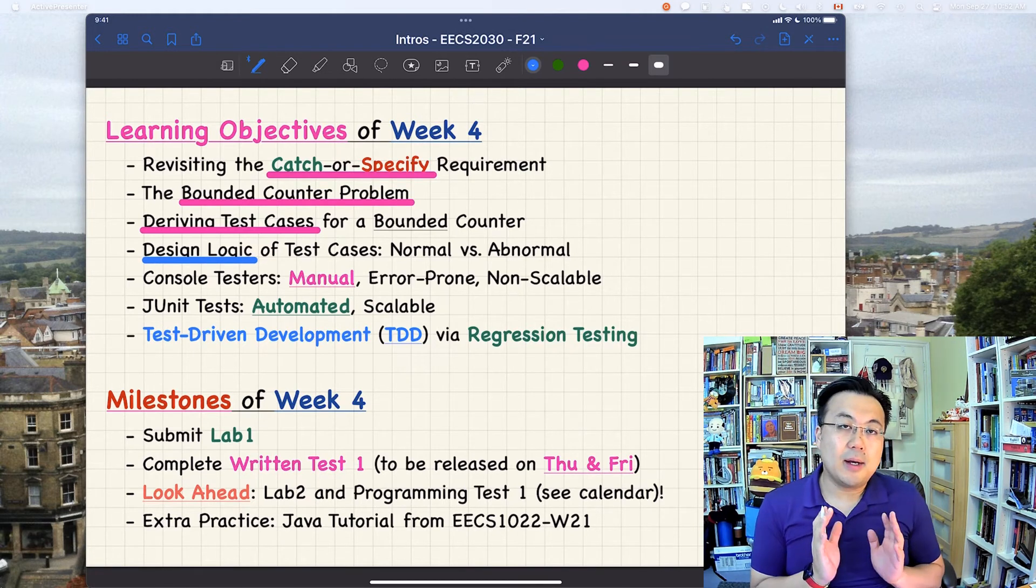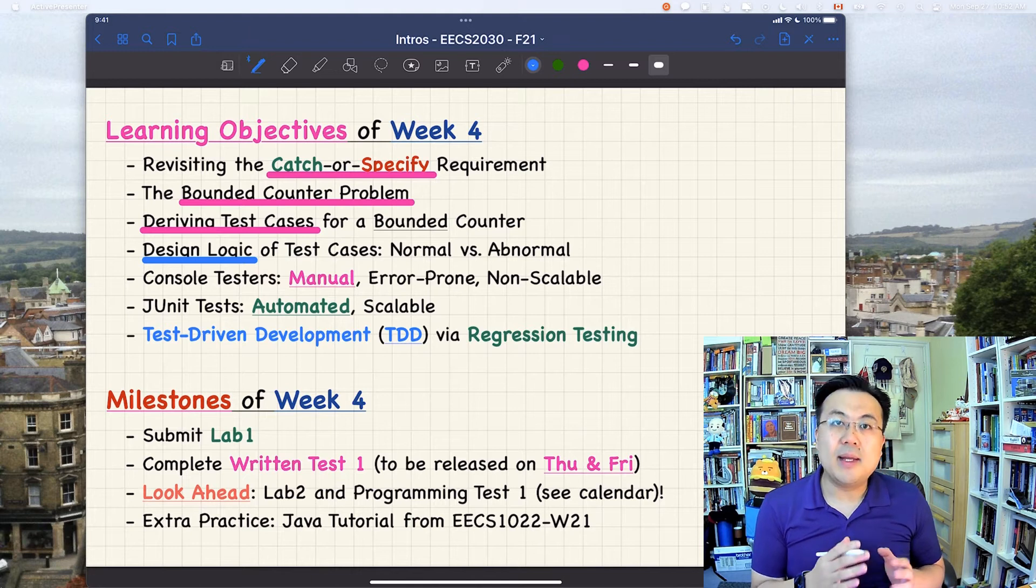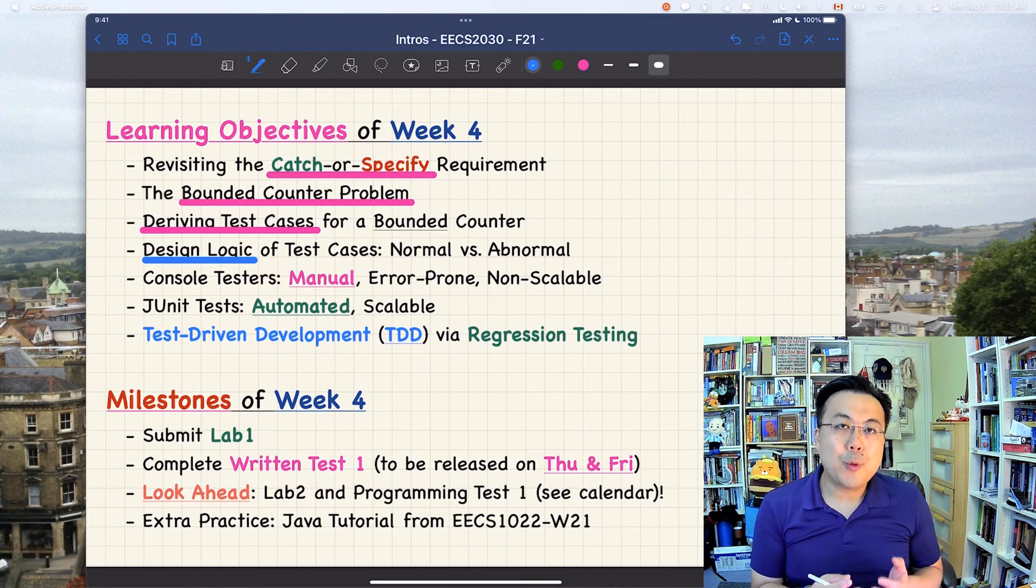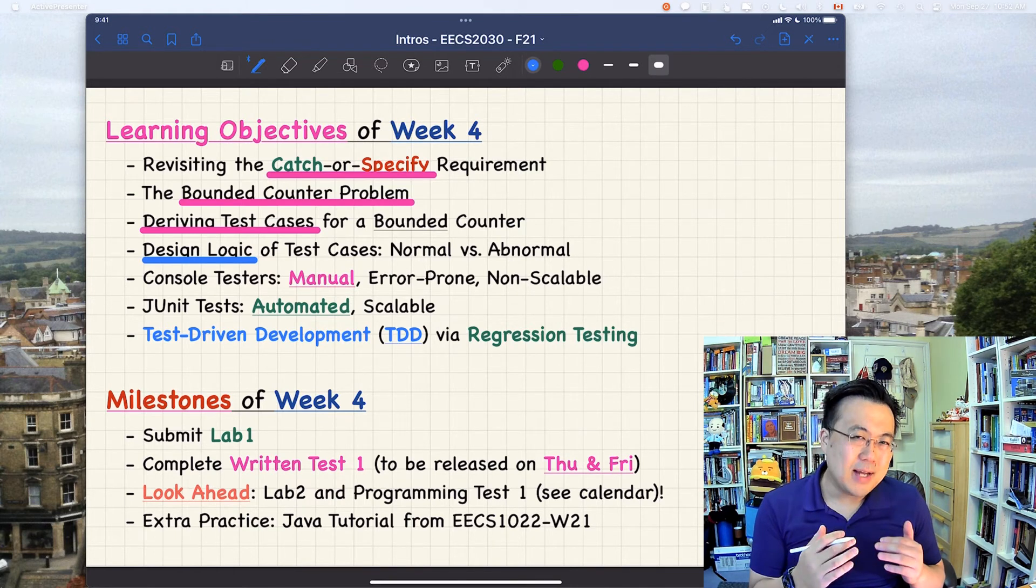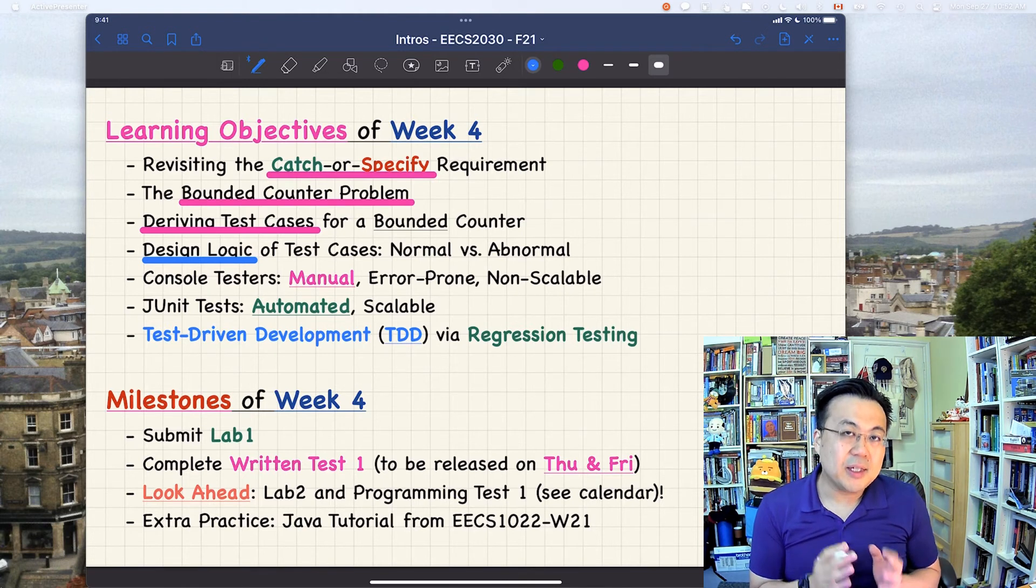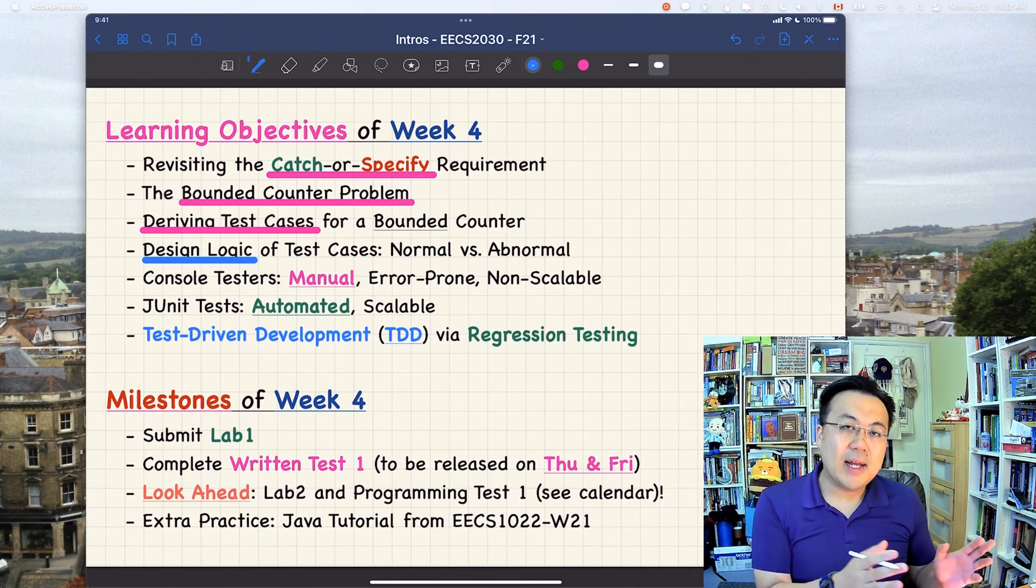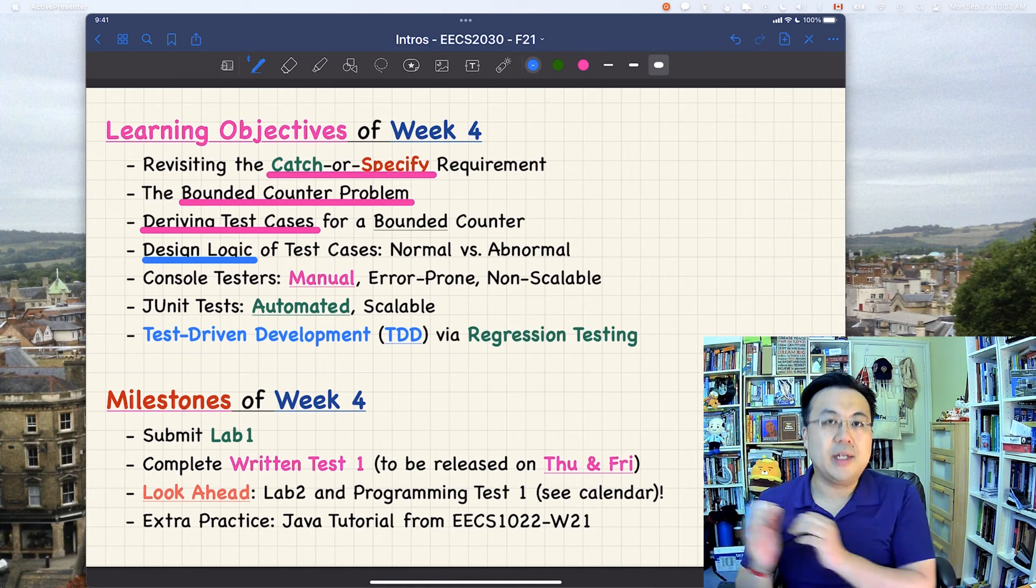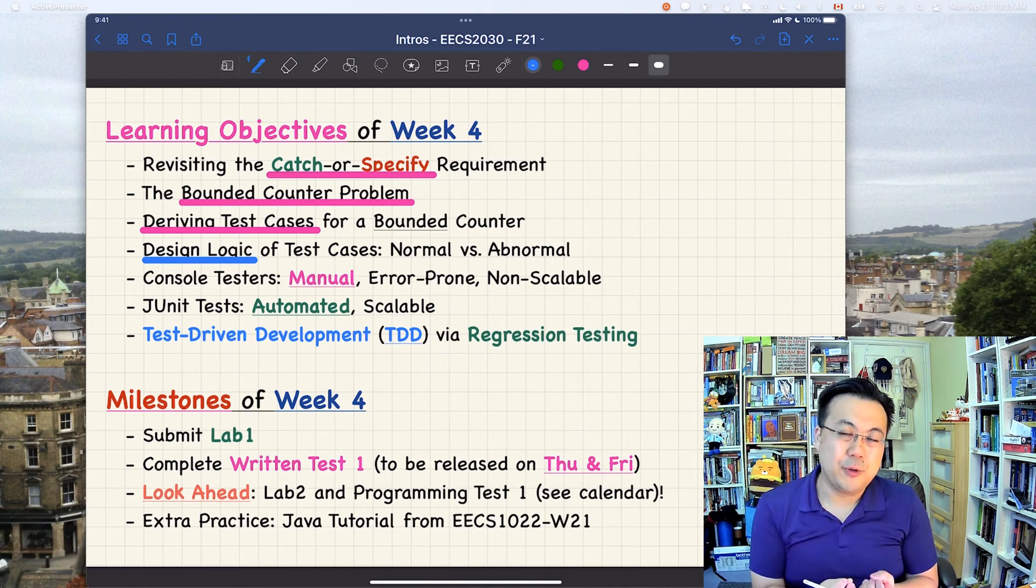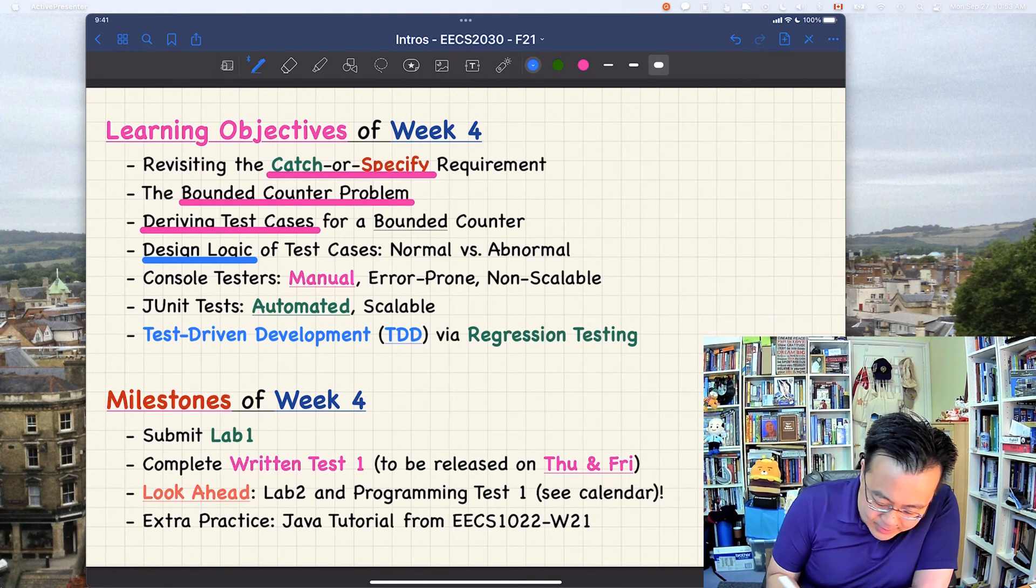And also, we're going to learn about the design logic of test cases. I'll start by showing you examples using console tester, namely the testers are basically console application classes, and then we'll simply print out error messages or success messages to the console. However, we're going to learn that it's actually manual, tedious, and error prone. So that's why we had to move on to using JUnits assertions. But the design logic for the test cases is completely identical. But it's good to go over some not-so-ideal solution first, and then talk about their limitation, and we'll move on to the ideal solution. That should be the way to actually learn things.